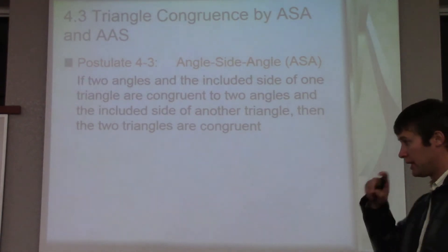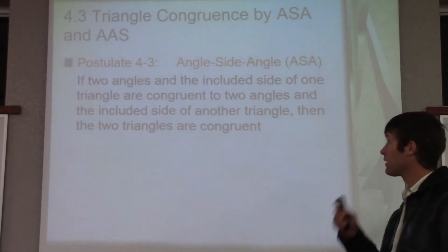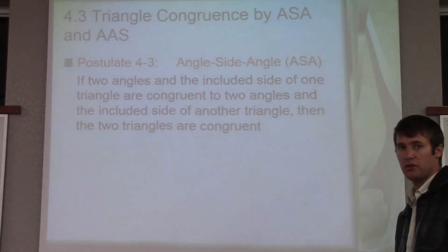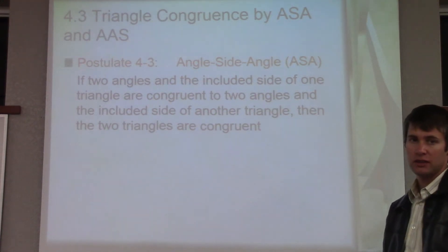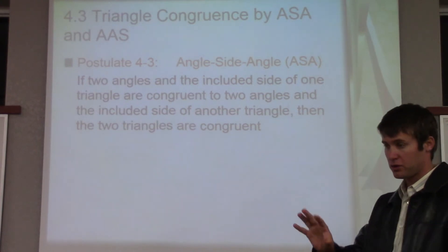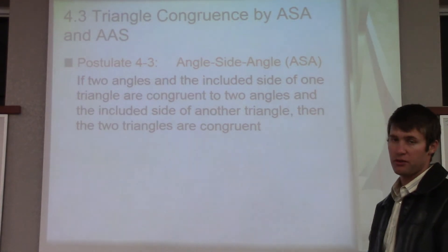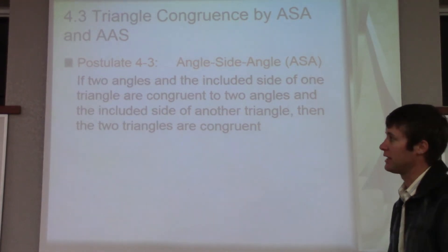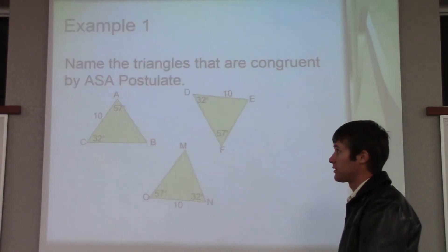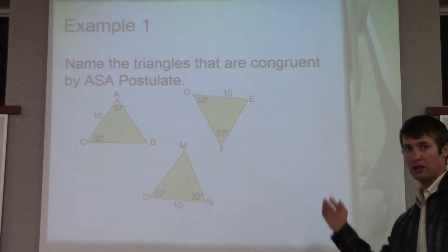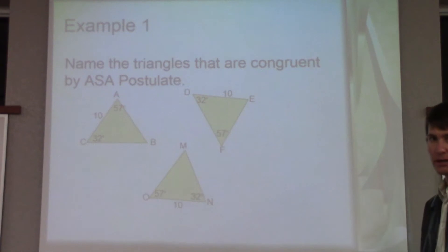The first one we're going to go through is angle-side-angle. So if two angles and the side between those two angles are congruent in one triangle to another triangle, then the triangles are congruent by angle-side-angle. So if I look at this postulate, we're going to prove which one of these triangles is true by angle-side-angle.